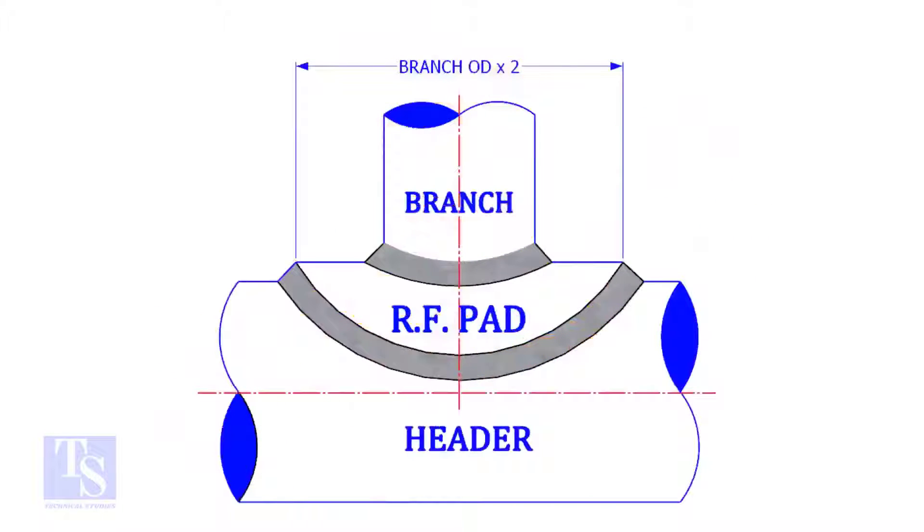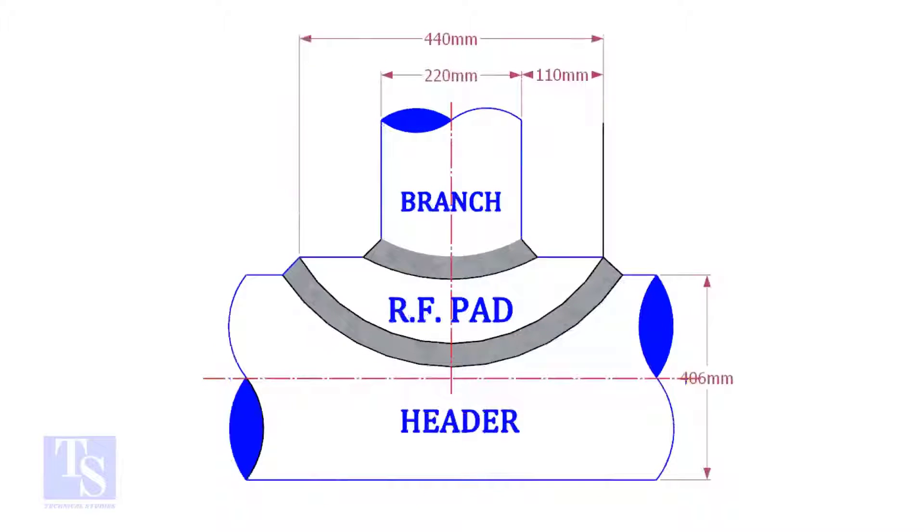Usually, the outer diameter of an RF pad is double the OD of the branch pipe. The OD of our branch pipe is 220 mm, so the outer diameter of our RF pad is 440 mm.